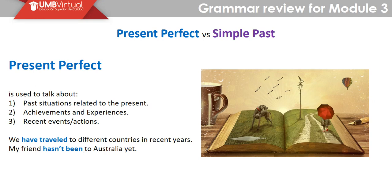The verb in past participle follows. We can see the first example uses a regular verb, while the second uses an irregular verb — the conjugation of the verb 'to be.' 'Yet' at the end of the sentence is used in present perfect to emphasize that the action has not been done. So: 'My friend hasn't been to Australia yet' — this person hasn't done this action yet.